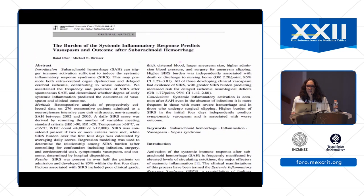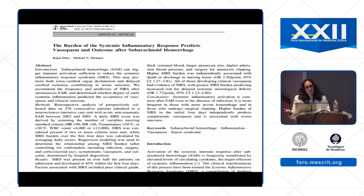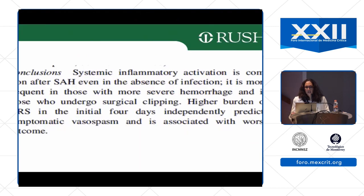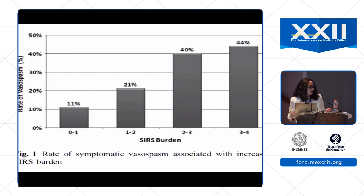Systemic inflammatory response is very common in patients with subarachnoid hemorrhage. Many develop fever, elevated respiratory rate, and elevated white count. In the ICU, always rule out secondary infection as the cause. If no source of infection is found, then the subarachnoid hemorrhage itself is causing the systemic inflammatory response. Patients who develop a SIRS response are more likely to not fare well — it independently predicts symptomatic vasospasm and is associated with worse outcomes.